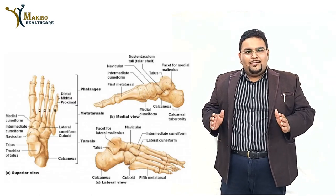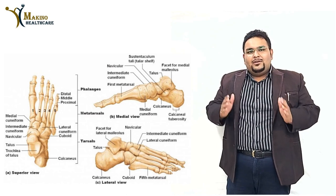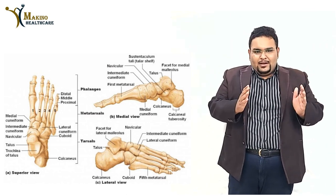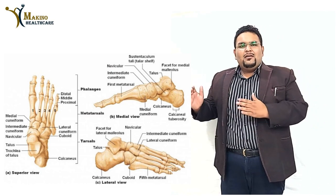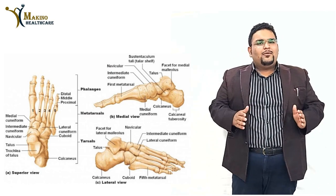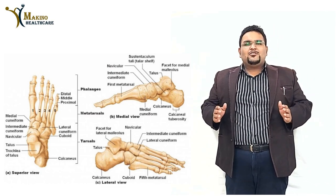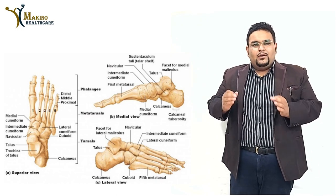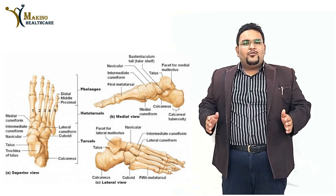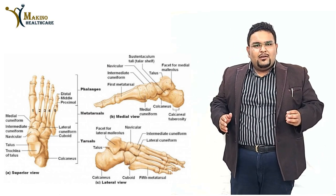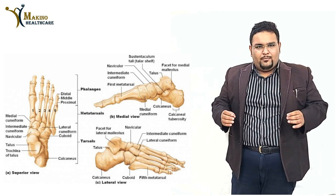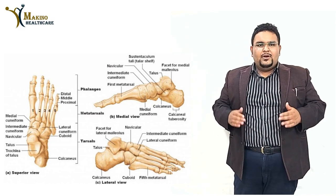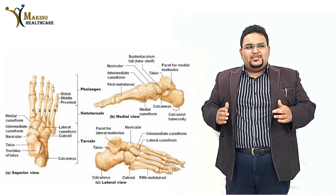Coming to the anatomy of the foot, we have divided the foot into three parts for convenience of understanding: hindfoot, midfoot, and forefoot. The hindfoot comprises the talus bone and the calcaneum bone. The midfoot comprises the navicular, cuboid, and cuneiform. The forefoot comprises the metatarsal and phalangeal joints.